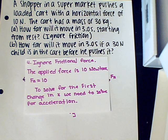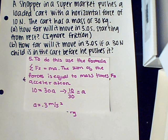Ignore frictional force. The applied force is 10 newtons. To solve for the first change in x, we need to solve for acceleration. To do this, we use the formula: the sum of Fx equals m times a. 10 is equal to 30 times a. 10 over 30 is equal to a. Acceleration is equal to 0.3 meters per second squared.